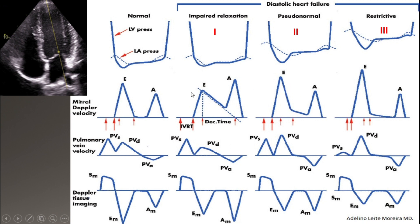Compared to normal, if we evaluate the same patient, E becomes taller than normal — the cutoff is 50 cm/s. So E becomes taller than 50 cm/s. In that case, left atrial pressure goes higher than normal — this is abnormal, and represents stage 2, or pseudonormal.